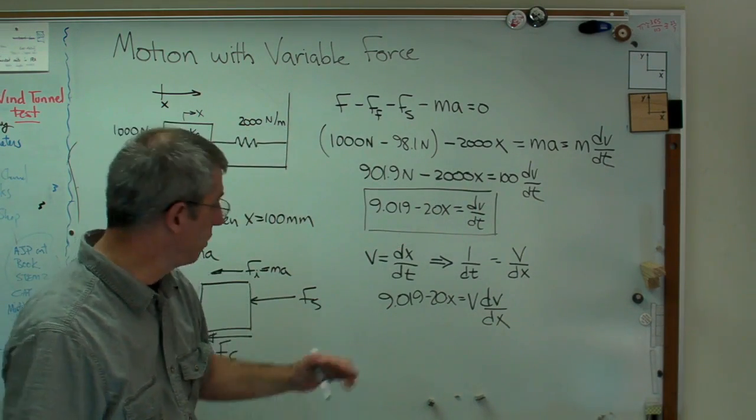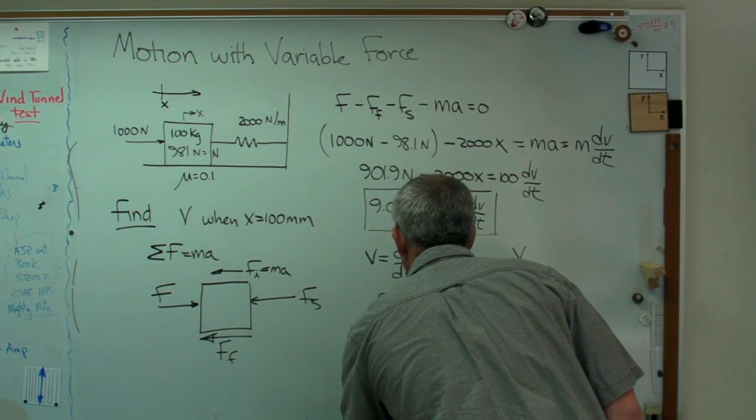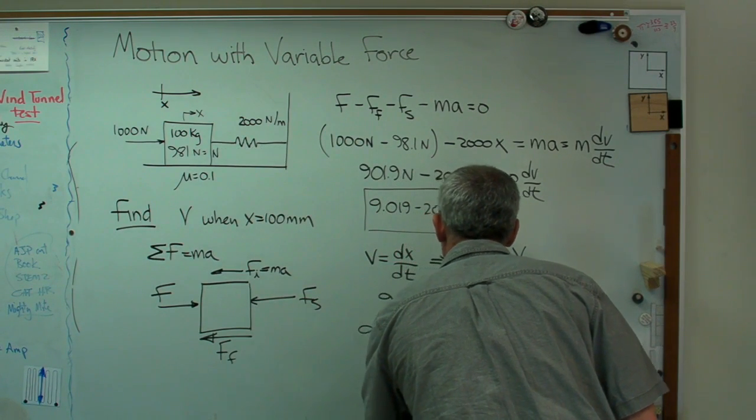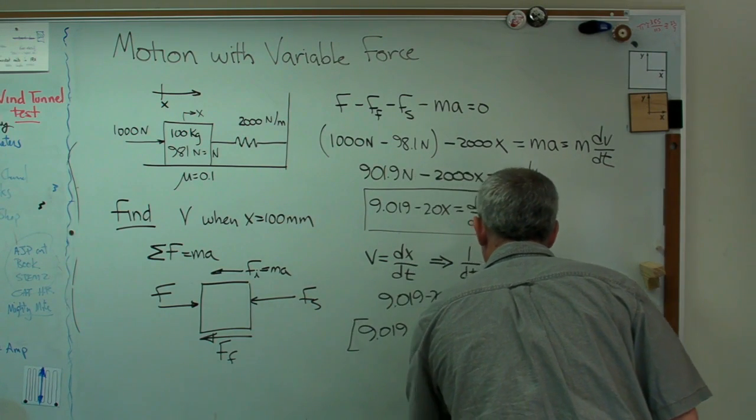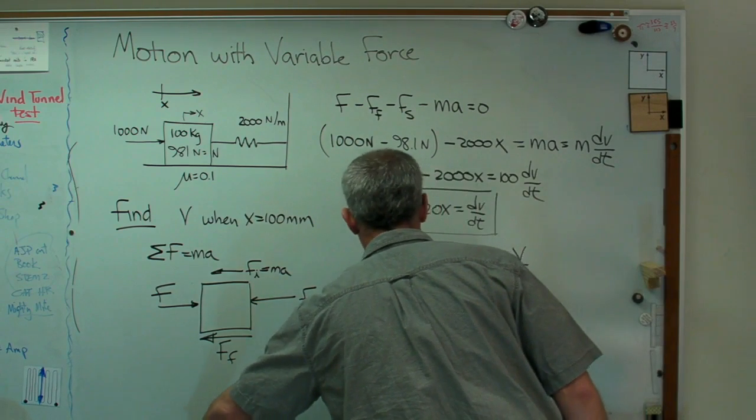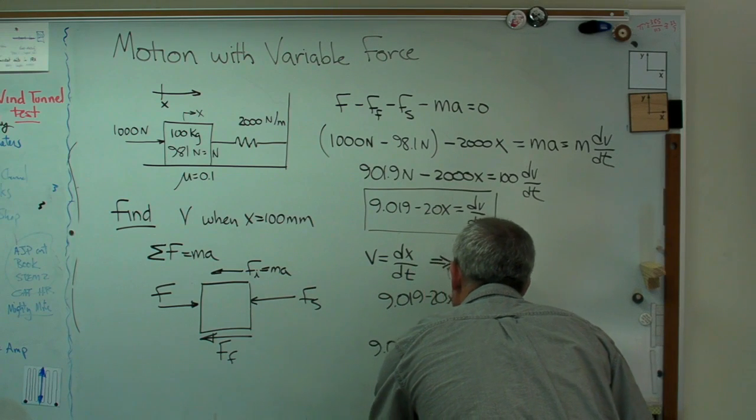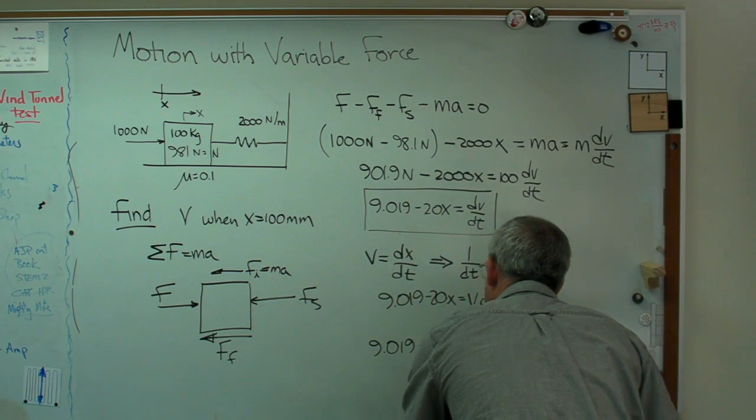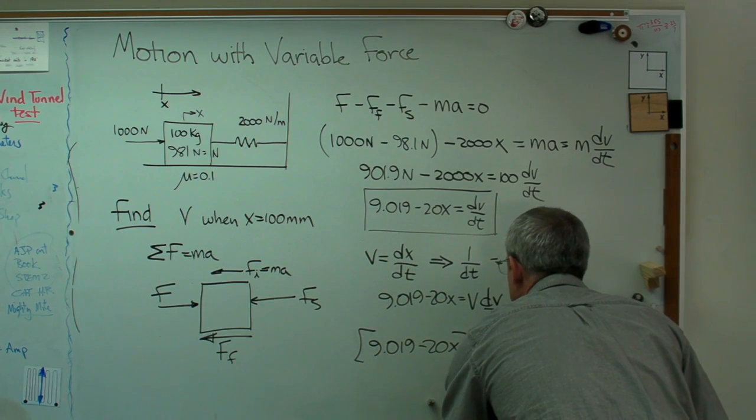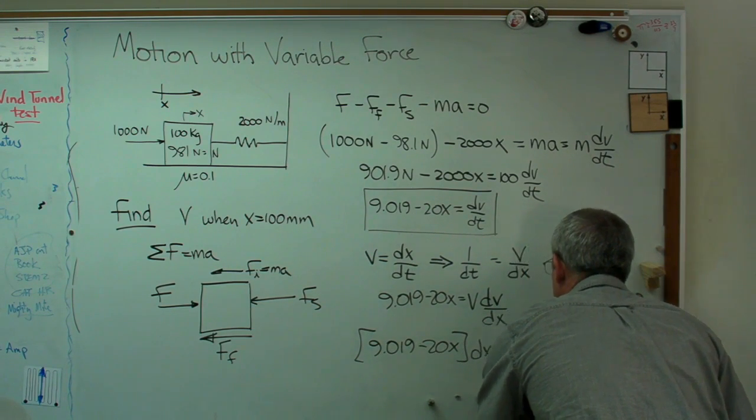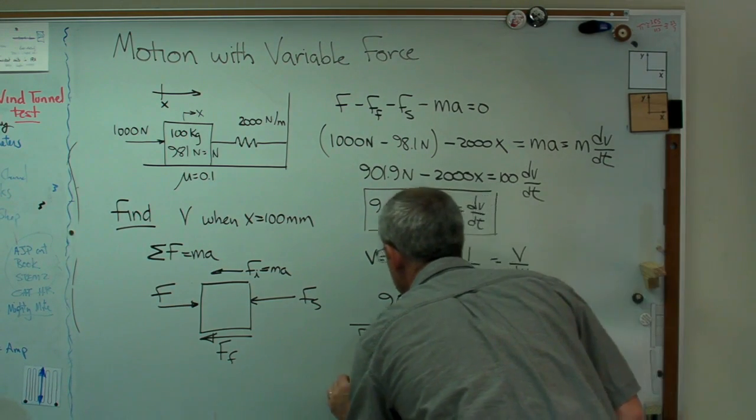And I'm going to do this. Let me try that one more time. 9.019 minus 20x, v, dx, dx equals vdv. And this is the important expression, right there.